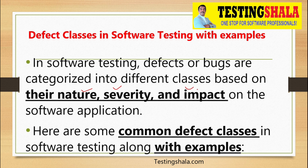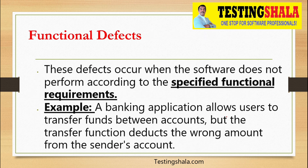The first classification of defects is functional defects. Functional defects occur when software does not perform according to the specified functional requirements. Any defect arising from that perspective is called a functional defect.